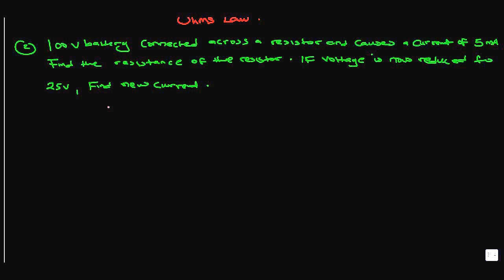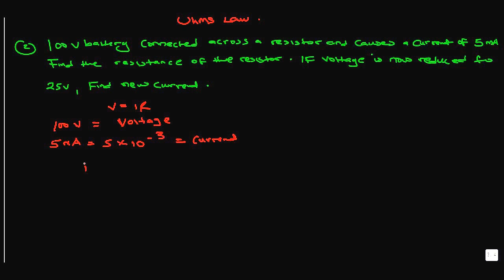We know Ohm's Law: V = IR. We have a 100-volt battery causing a 5 milliamp current, which is 5 times 10 to the minus 3 amps. Resistance equals V over I, which gives us 100 divided by 5 times 10 to the minus 3.